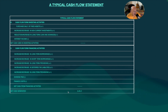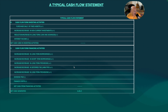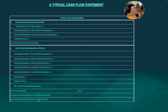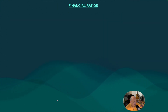The net cash generated equals cash flow from operating activity plus cash flow from investing activity plus cash flow from financing activity. Cash and cash equivalents at the beginning period minus cash and cash equivalents at the end period should equal the net cash generated. That is a typical cash flow statement analysis.